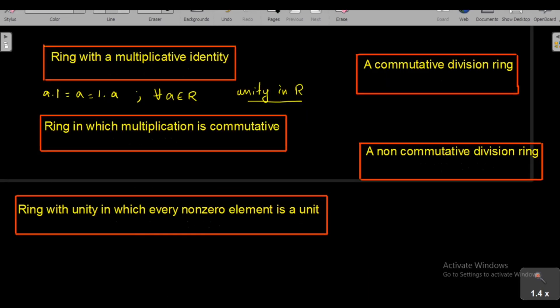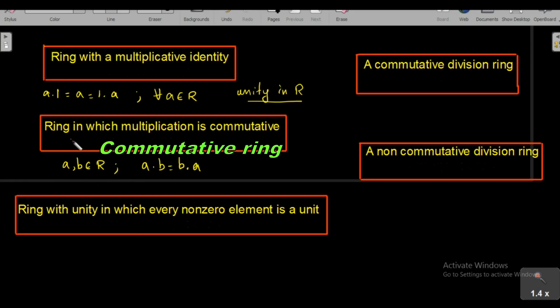If R with the operations plus and dot is a ring, then R with addition must be an abelian group, so addition is commutative in a ring R. But multiplication need not be commutative in R. If for any two elements A, B in R we have A · B = B · A for all A, B in R, we say that multiplication is commutative in R, and such a ring is called a commutative ring.